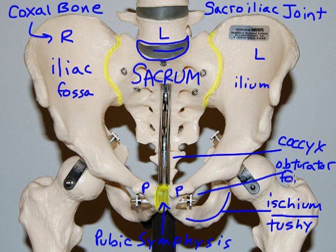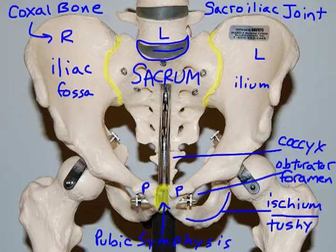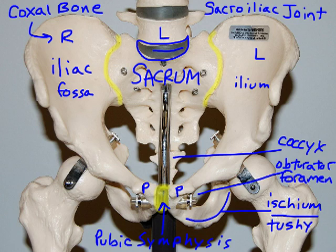We also have a large foramen — in fact the largest foramen of the skeletal system — called the obturator foramen. Obturate means to cover up, and we have a membrane that covers up a lot of the blood vessels and nerves running through this large opening in the inferior pelvic girdle.